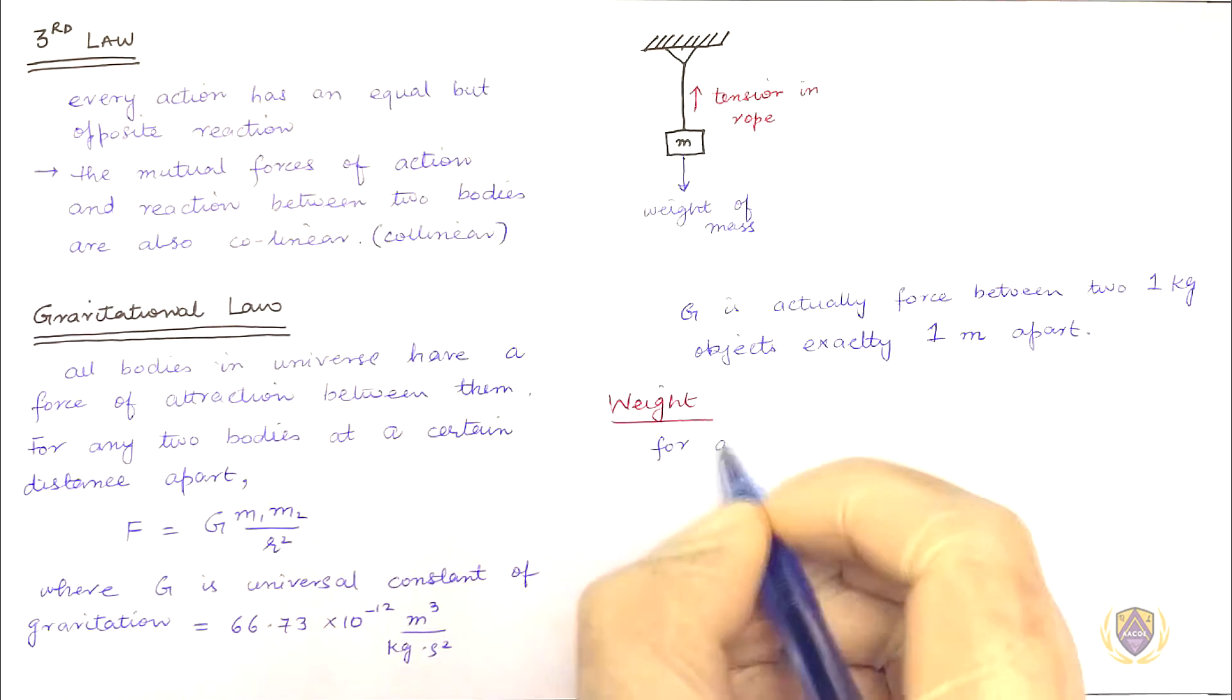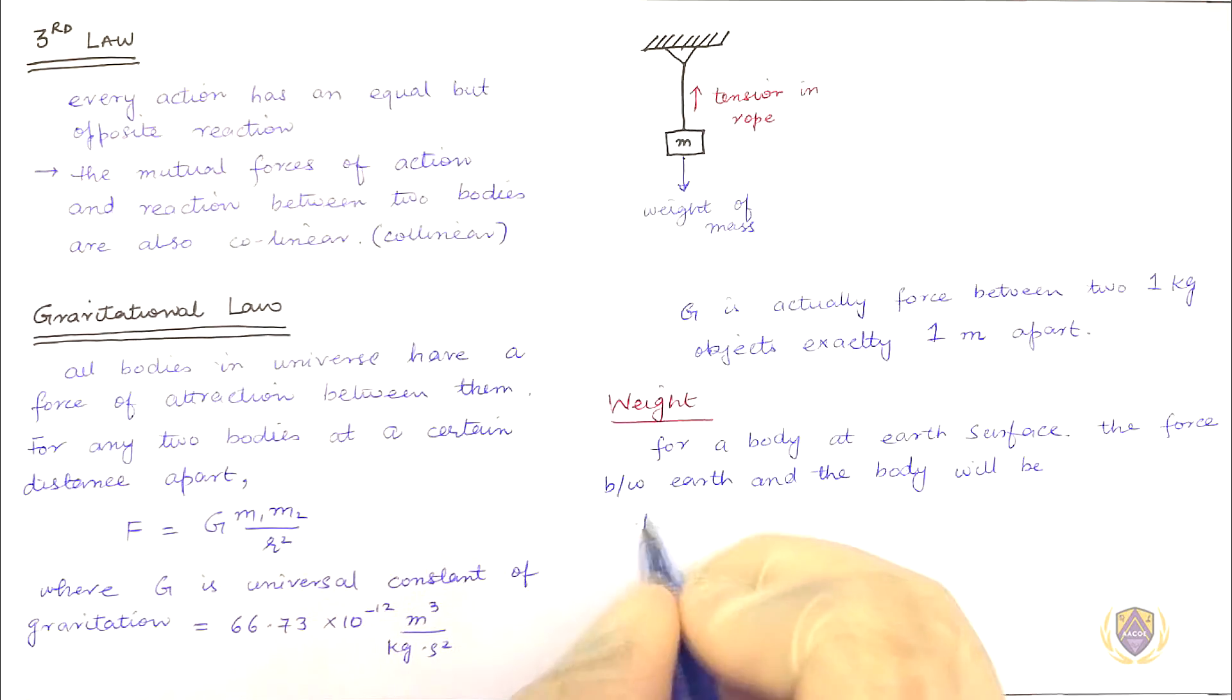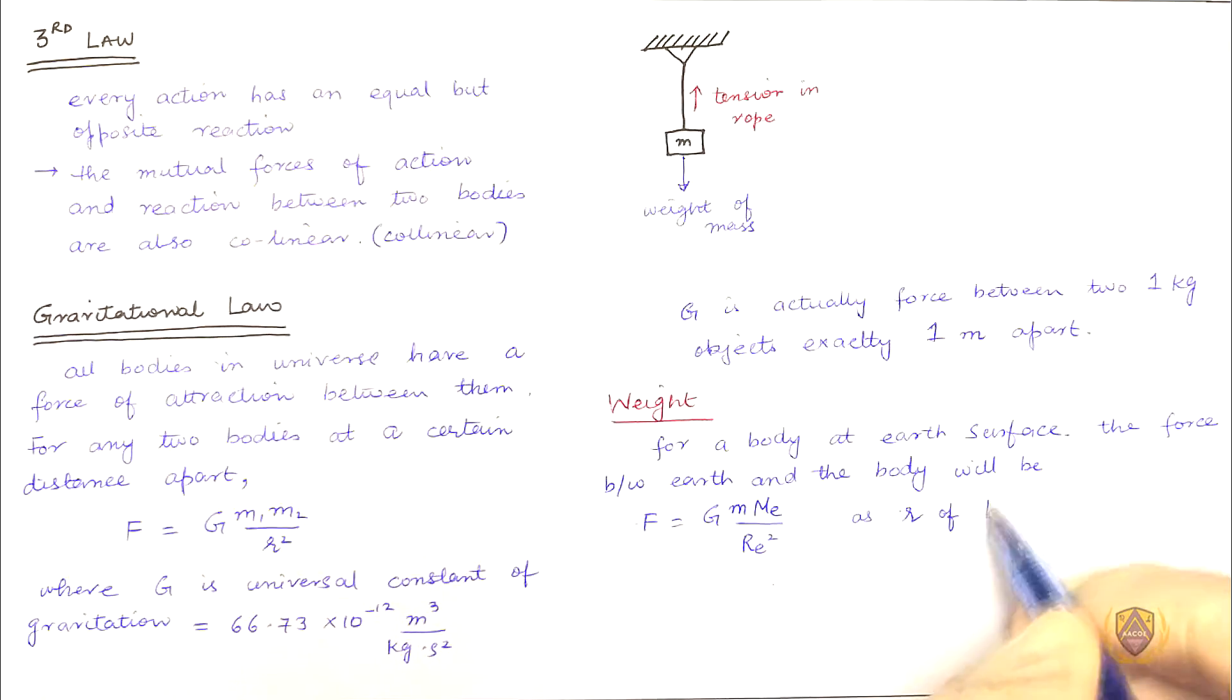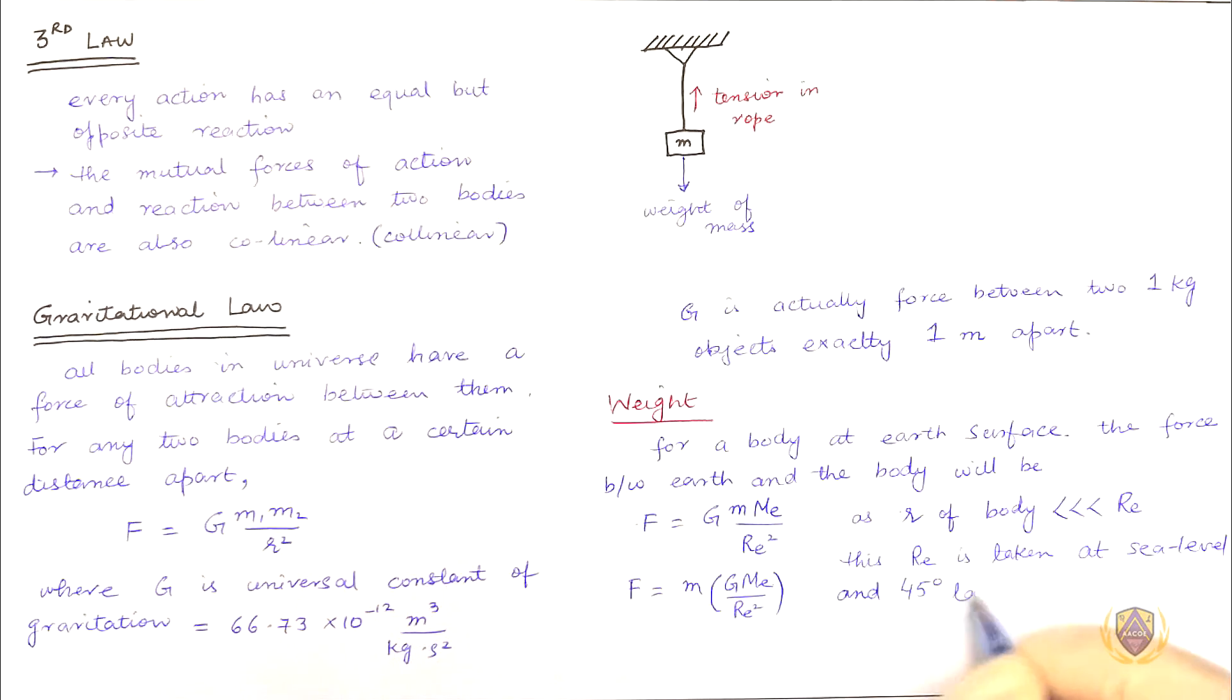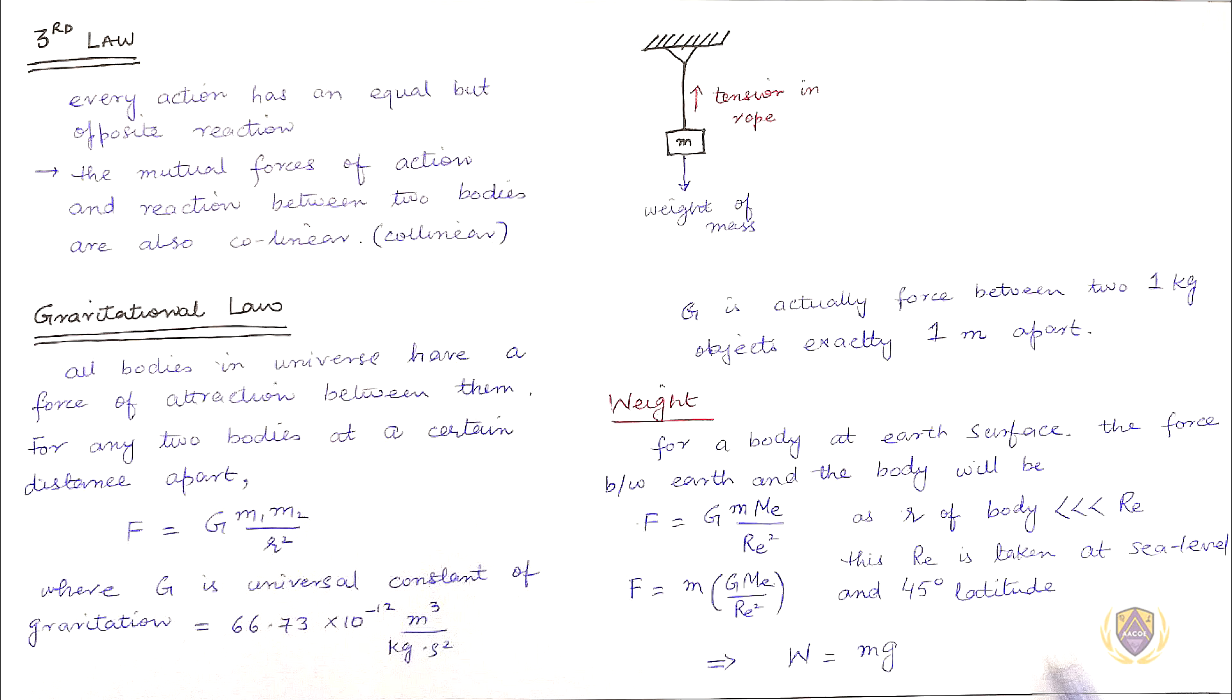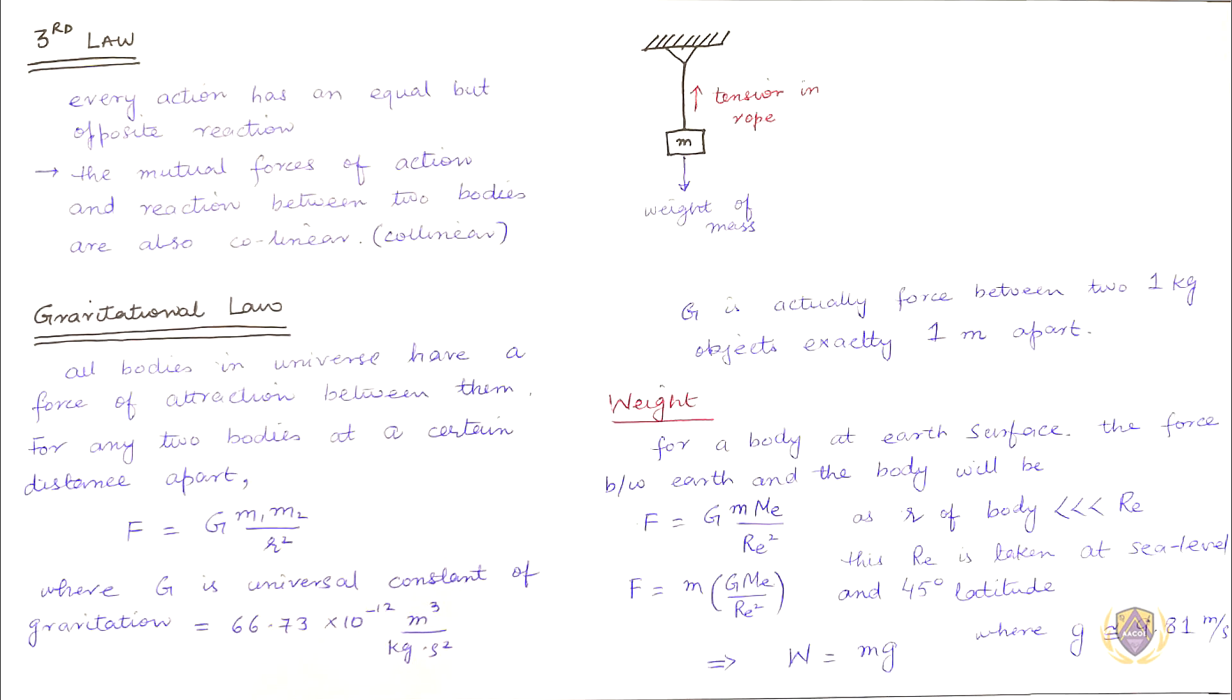Weight: For a body at earth surface, the force between earth and the body will be given by F equal to G M M E over R E square, as radius of the body is very small as compared to radius of earth. This R E is taken at sea level and 45 degree latitude. Solving we get weight equal to mass times acceleration due to gravity, where g equals 9.81 meter per second square.